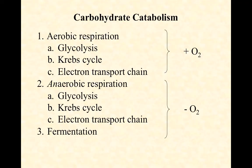Aerobic respiration is the preferred catabolic metabolism for just about everything besides obligate anaerobes, as long as oxygen is available. The redox reactions that are carried out when oxygen is around simply yield more energy, and therefore more ATP can be produced.